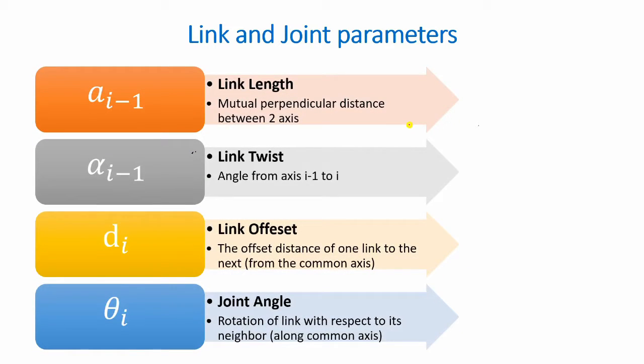Alright guys, so before we look at DH tables, let's have a look at our link and joint parameters, the four values which make up our DH tables. Now these can be understood by considering two arbitrary joints. Let's just imagine a joint here, a revolute joint, connected through some sort of link to another revolute joint over here.